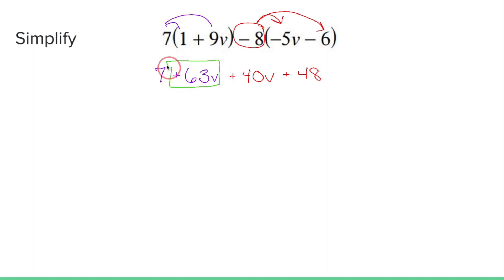If we have a 63v, that combines with a positive 40v, which gives you 103v. Add the numbers and attach the v.